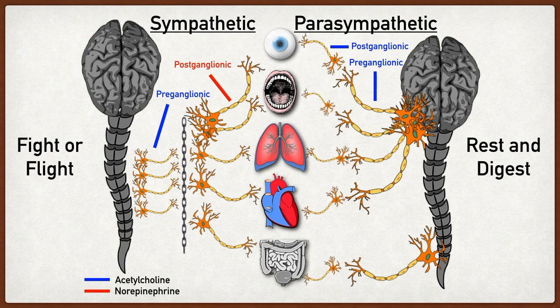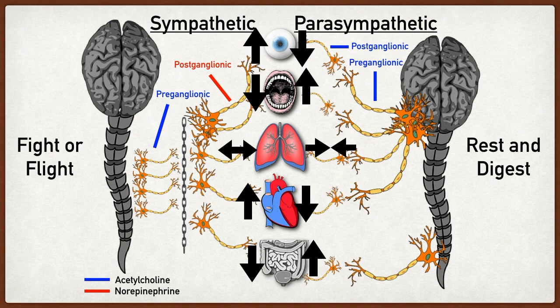Both of these systems are continuously working and they essentially counteract one another. The sympathetic nervous system will increase its activity secondary to situations that provoke fear, danger, anxiety, and stress. Some of these responses include dilating the pupils, decreased salivation, dilation of the airways and bronchi, increased heart rate, and decreased digestion and urination.